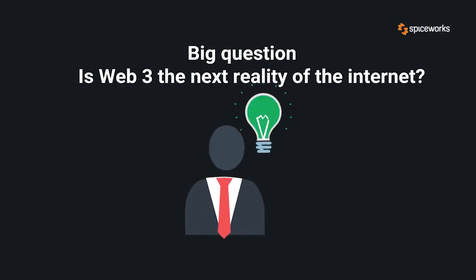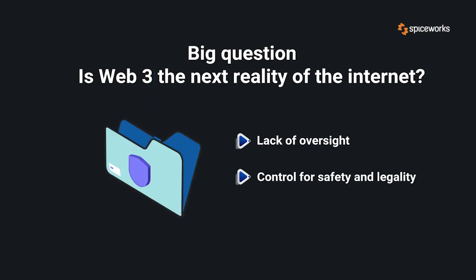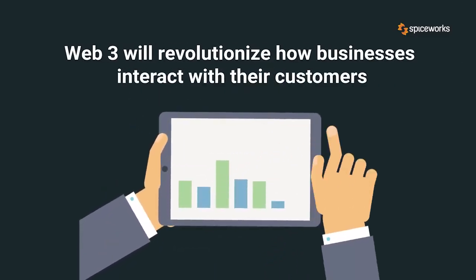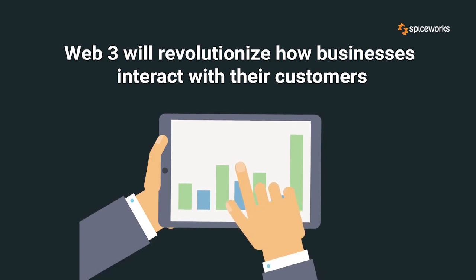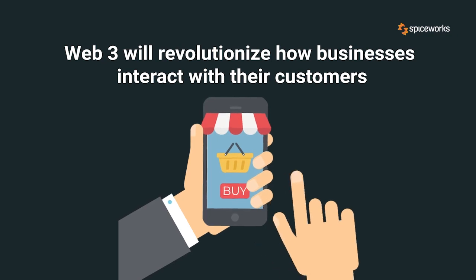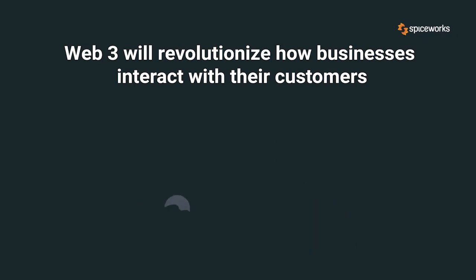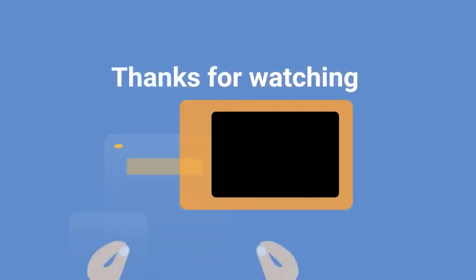Here is the big question: is Web 3 the next reality of the internet? Excitement and questions have been raised about the decentralized internet, with its inherent lack of oversight and control for safety and legality. As Berners-Lee envisioned, Web 3 will create a universal space ungoverned by a central authority. It will revolutionize how businesses interact with their customers, allowing companies to access end users directly.